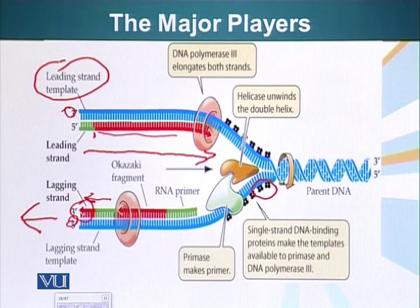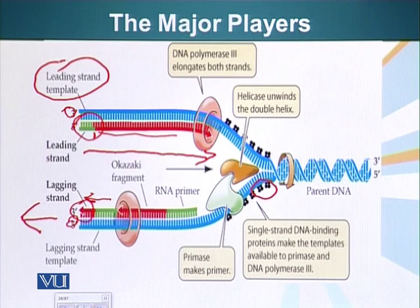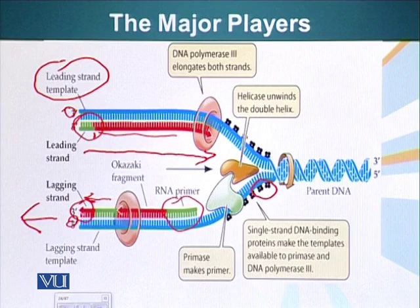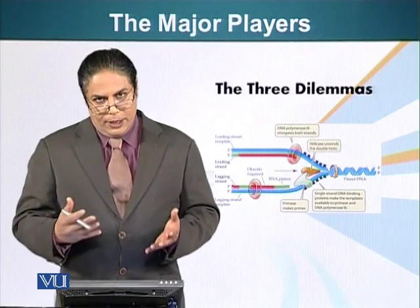As you can see, there is a dilemma during replication. We need to get rid of these RNA primers — not only in the lagging strand, but also in the leading strand. The other dilemma is how to synthesize the lagging strand. We will look at those in more detail in the subsequent module.